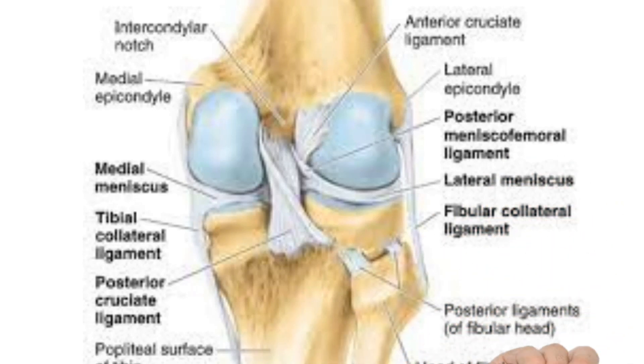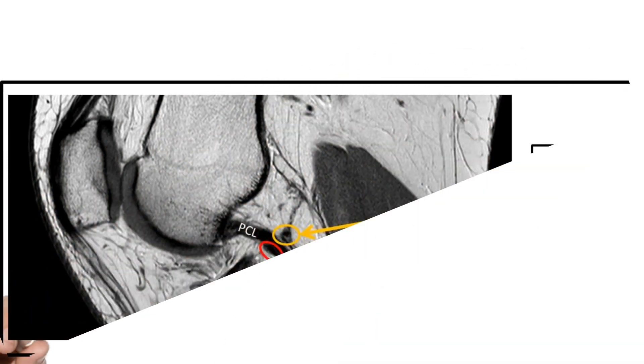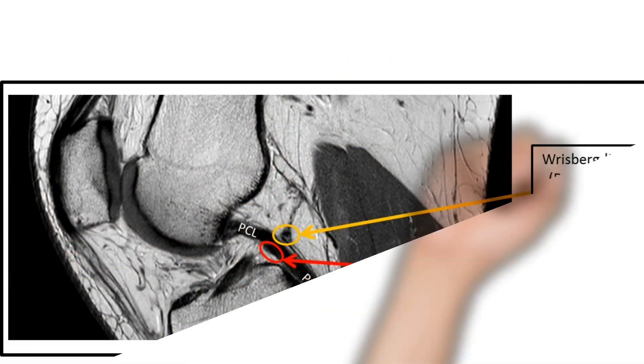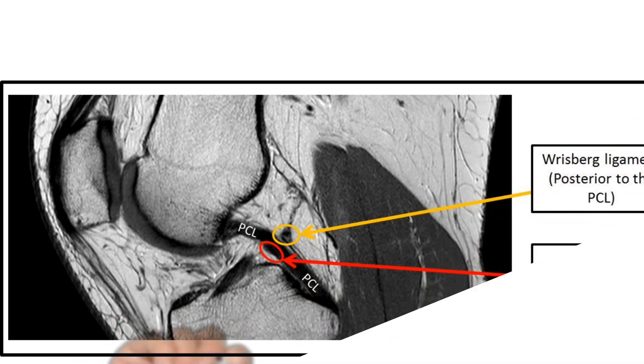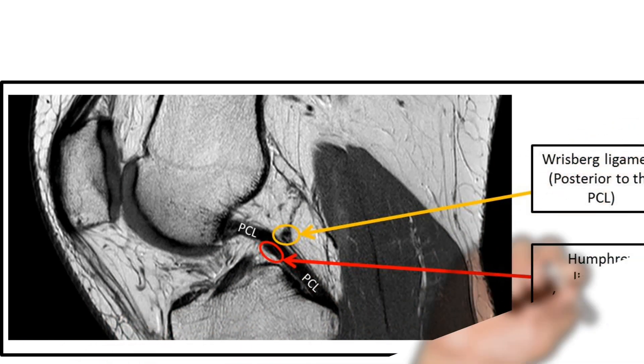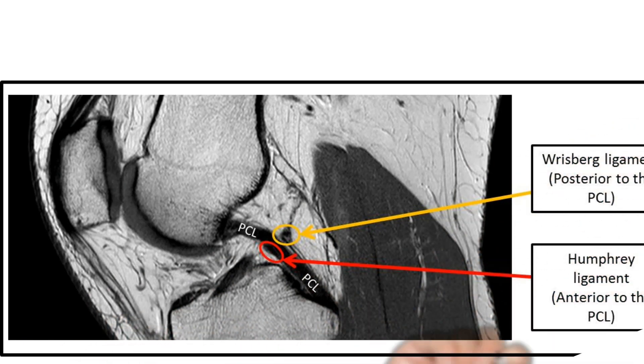Regarding the PCL, there are also meniscofemoral ligaments, consisting of the ligament of Humphrey, which is anterior, and the ligament of Wrisberg, which is posterior. They arise from the posterior horn of the lateral meniscus and insert into the substance of the PCL. The blood supply of the PCL is similar to the ACL, from the middle geniculate artery.